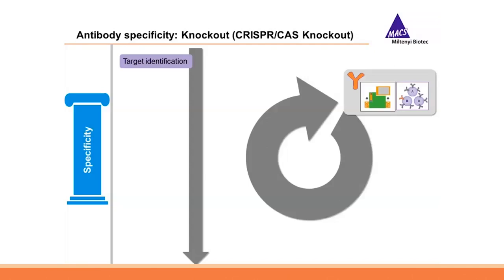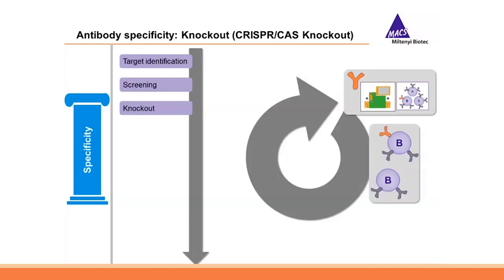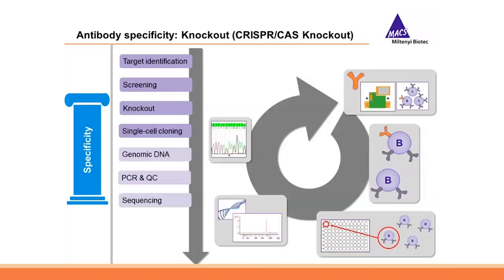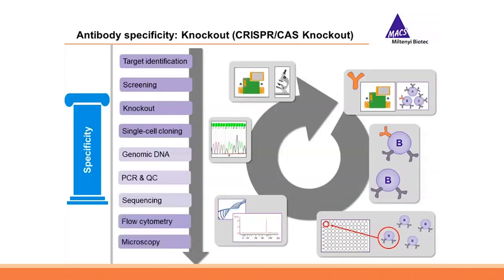As a first step, a cell line expressing the gene of interest is identified by screening. The target gene is then knocked out in the suitable cell line using site-specific nucleases, followed by single-cell cloning to achieve a pure knockout cell population. Genomic DNA is isolated and the knockout is confirmed by sequencing of the target locus. The clone used for testing is selected by DNA sequence to find the most reliable knockout.